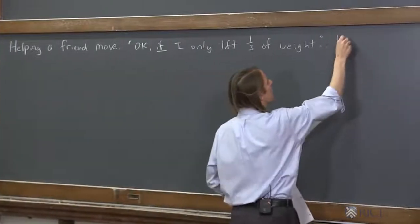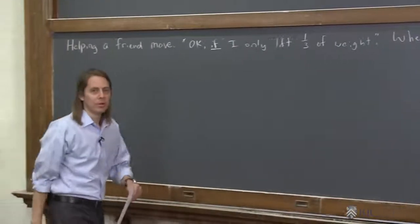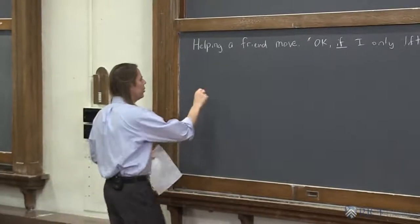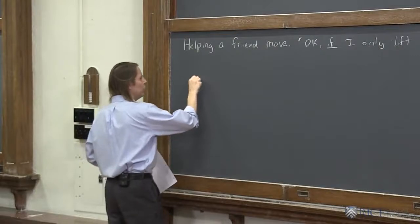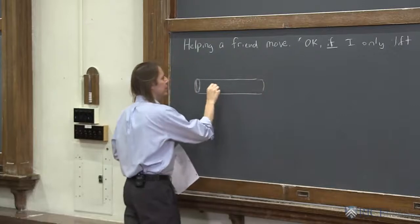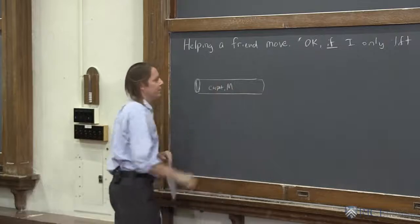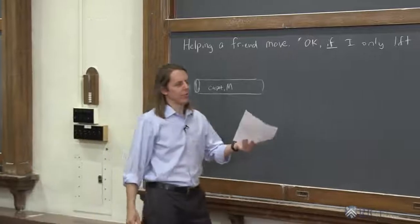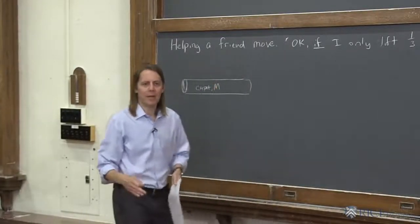And the question is, where should I hold something, and where should my friend hold something? So let's set it up mathematically. Let's say we're carrying a really big carpet. It's rolled up, really heavy, like that. So this is a carpet, and it's mass big M, because it's heavy. And if we agree that I'm only going to carry a third of the weight, we've got to be smart enough to know how to arrange ourselves to make that happen.